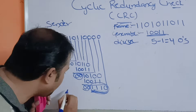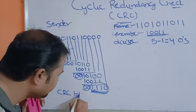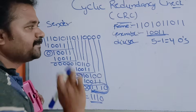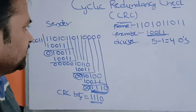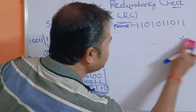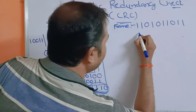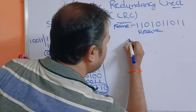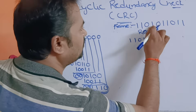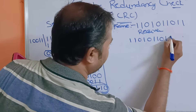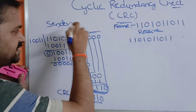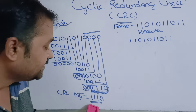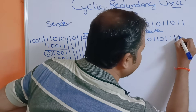So here we got the CRC bits. The CRC bits are 1 1 1 0. Now we append 1 1 1 0 to the original message and transmit that message to the receiver. At the receiver side, the original message is 1 1 0 1 0 1 1, but previously we had appended 4 zeros at the sender side to find the remainder. Now in place of those 4 zeros we append these 4 CRC bits: 1 1 1 0.